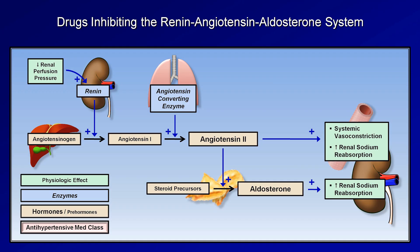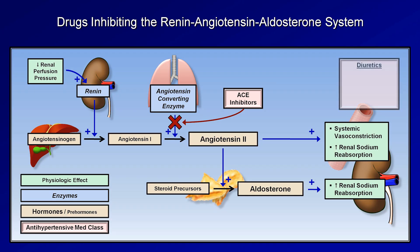There are five distinct classes of antihypertensive medications which interfere with this system. Starting with the two most important: ACE inhibitors block the conversion of inactive angiotensin-1 to active angiotensin-2. Diuretic medications are a particularly diverse class, including thiazide, loop, and potassium-sparing diuretics, and directly interfere with renal sodium reabsorption in the kidneys.